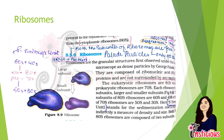Ribosomes were first observed by George Palade in 1953 — remember this name as it is asked in exams. They are composed of RNA and protein, and have no surrounding membrane. The 'S' in 70S and 80S stands for the Svedberg unit, which is indirectly a measure of density and size of the ribosome. The 70S ribosome has 50S and 30S subunits; the 80S ribosome, present in eukaryotic cells, has 60S and 40S subunits.